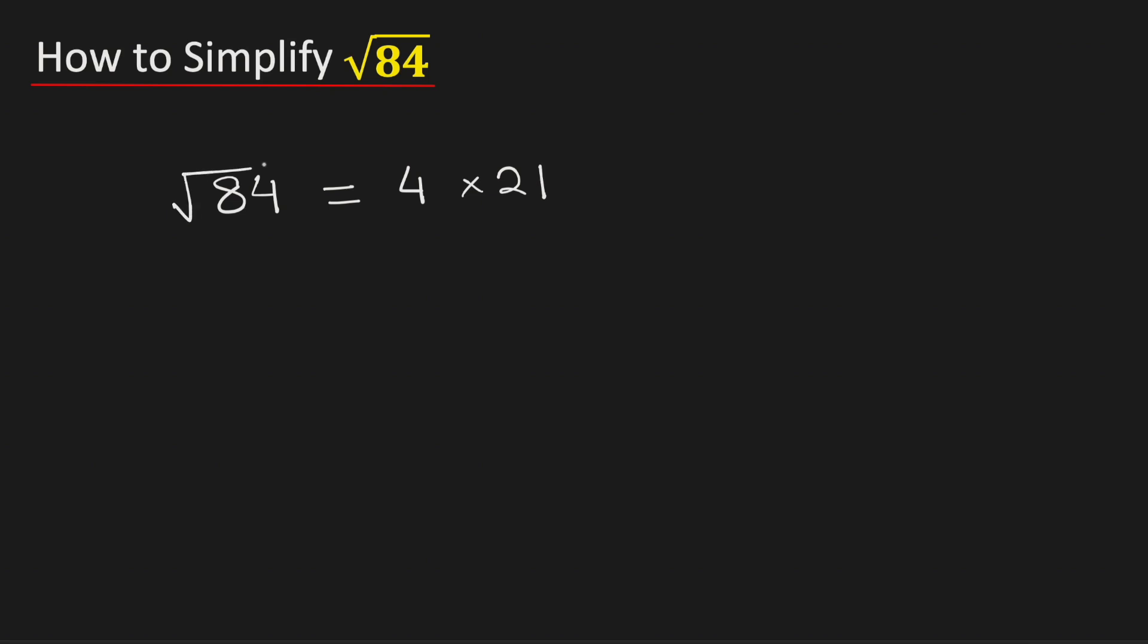Now we will take the square root on both sides, and this can be rewritten as square root of 4 times square root of 21.